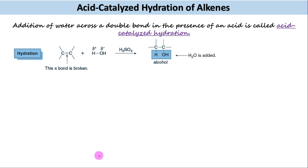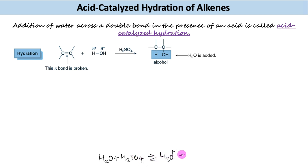Water itself is too weak an acid to protonate the alkene. With added acid — for example, sulfuric acid — a hydronium ion is generated which can then readily add to the carbon-carbon double bond.